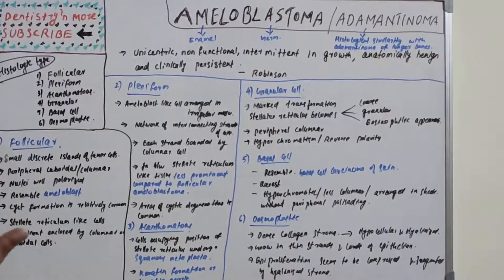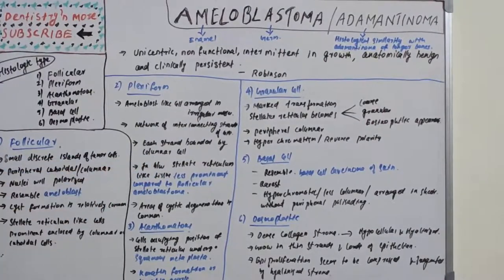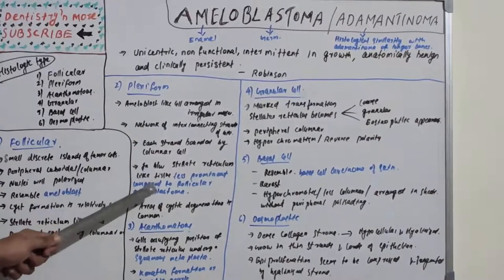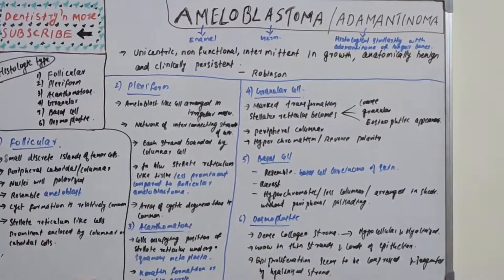In the plexiform type: ameloblast-like cells are arranged in irregular masses and a network of interconnecting strands, each bounded by a columnar cell. The stellate reticulum-like tissue is less prominent compared to follicular ameloblastoma, and areas of cystic degeneration are also common.